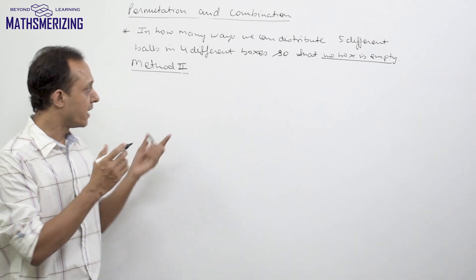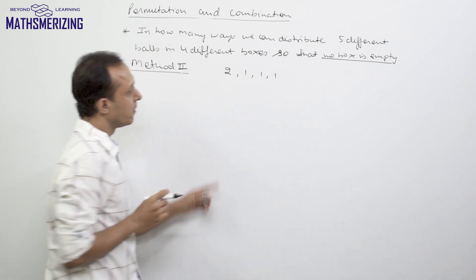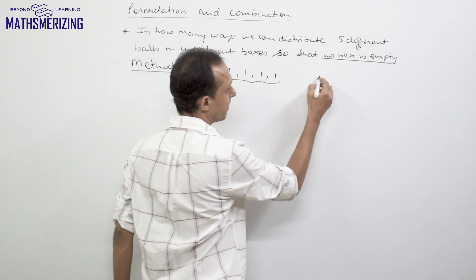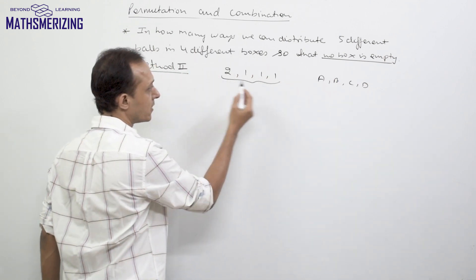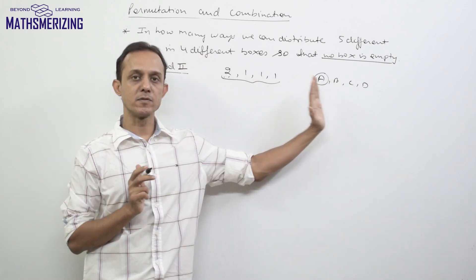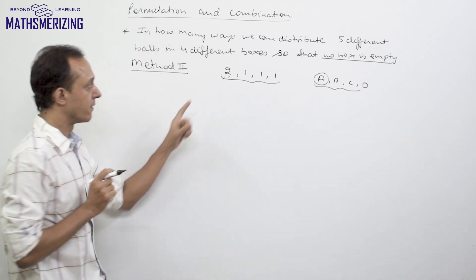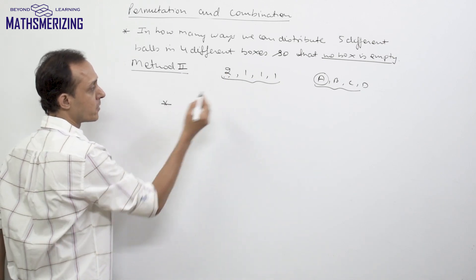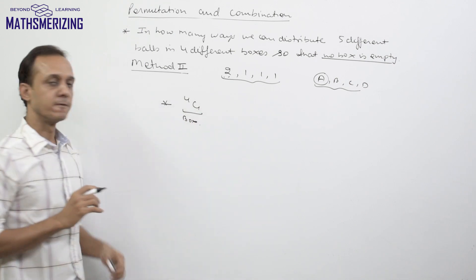Method 2: again we know we have to distribute so that 1 box will have 2 balls and the remaining 3 boxes will have 1 ball each. Suppose the boxes are A, B, C, and D. First, I'll select which box will contain 2 balls — this can be done in 4C1 ways.